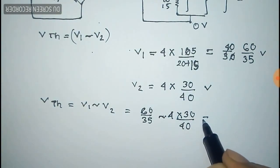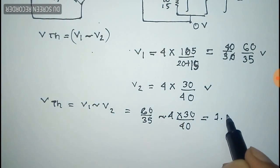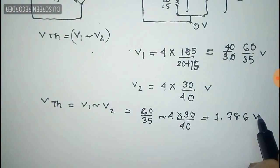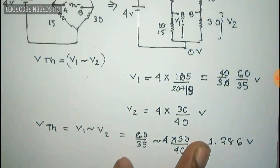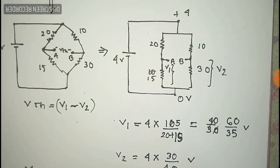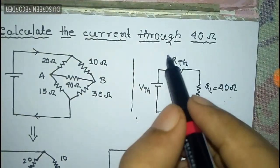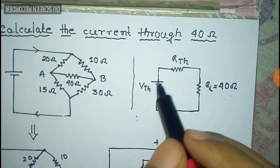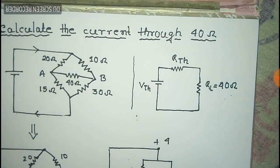After subtraction we get the value of V_thevenin as approximately 1.286 volts. Now we have already calculated the Thevenin voltage, so we have to calculate the Thevenin resistance next.